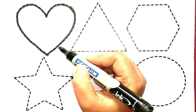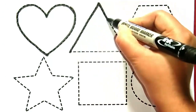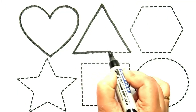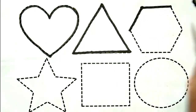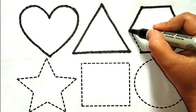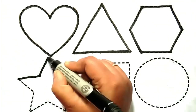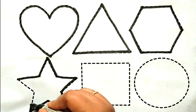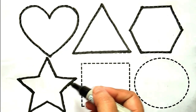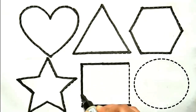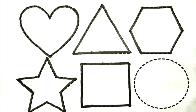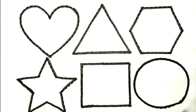Yeh hai heart. Yeh hai triangle — kia hai gears, yeh hai triangle. Yeh hai hexagon. Yeh hai star. Yeh hai square. Yeh hai square, yeh hai circle.